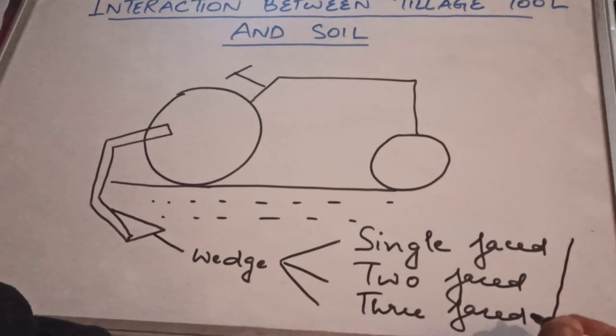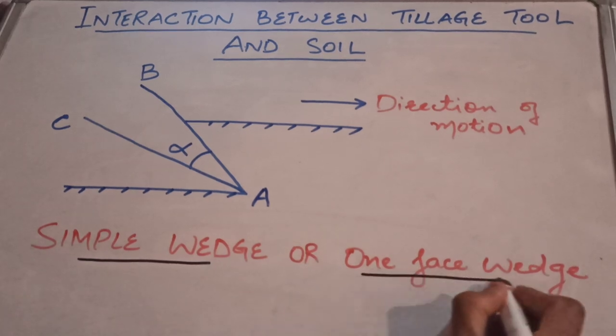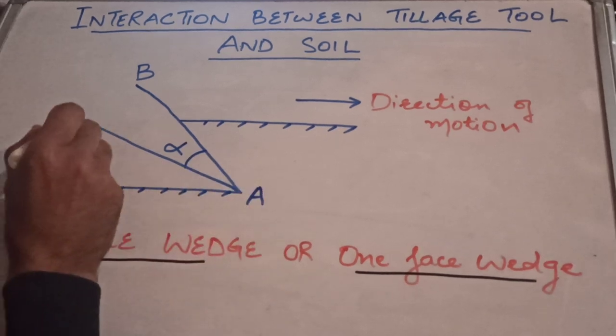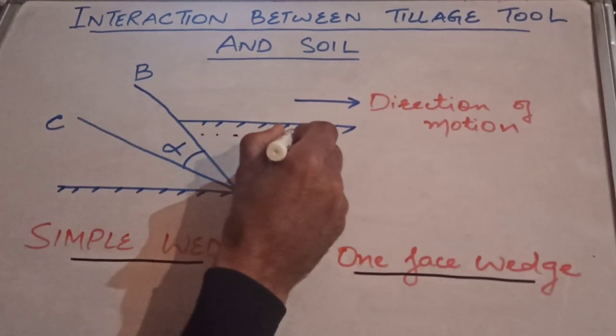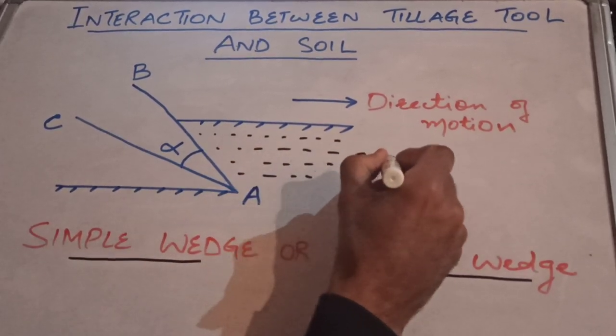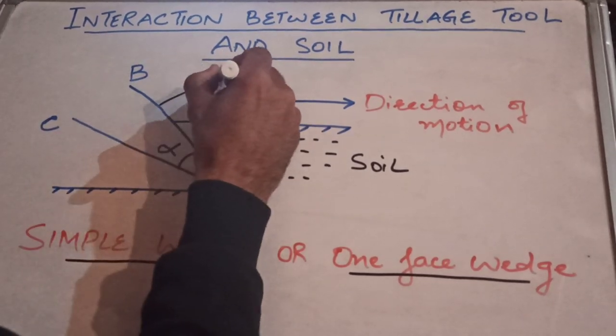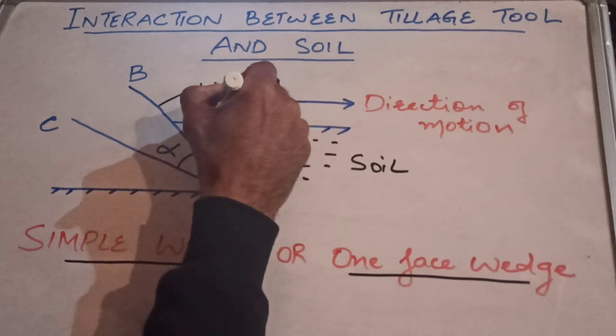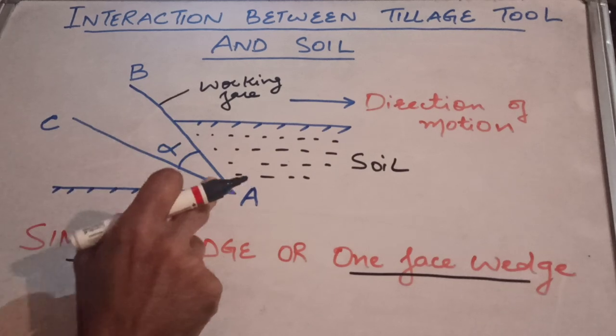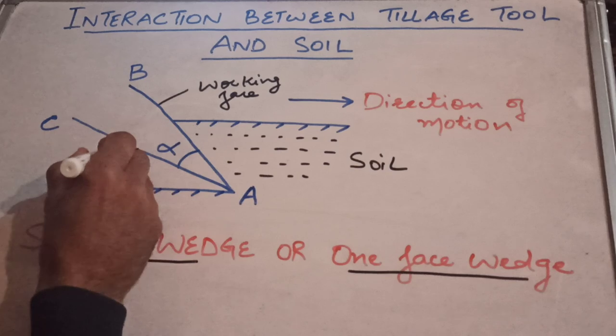This is the single wedge or one face wedge. It has two sides, AB and AC. This AB directly comes in contact with the soil, so AB is the working face. This AC never comes in contact with the soil. This face is called the idle face.